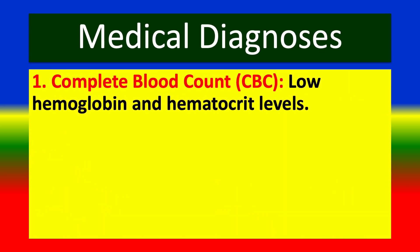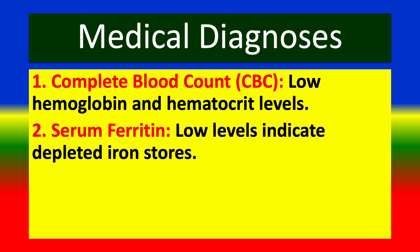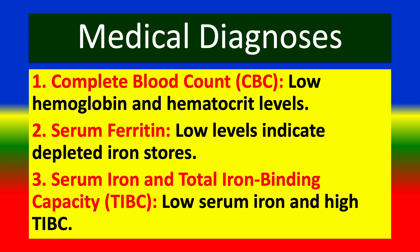Diagnosis involves a complete blood count (CBC) showing low hemoglobin and hematocrit. Serum ferritin levels are measured, and low ferritin indicates depleted iron stores. Serum iron and total iron-binding capacity (TIBC) are also assessed, with low serum iron and high TIBC being characteristic findings.